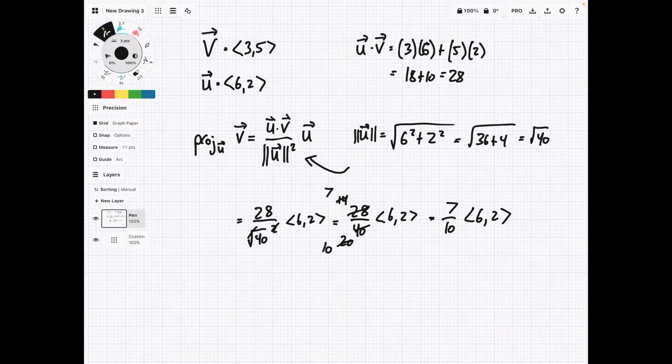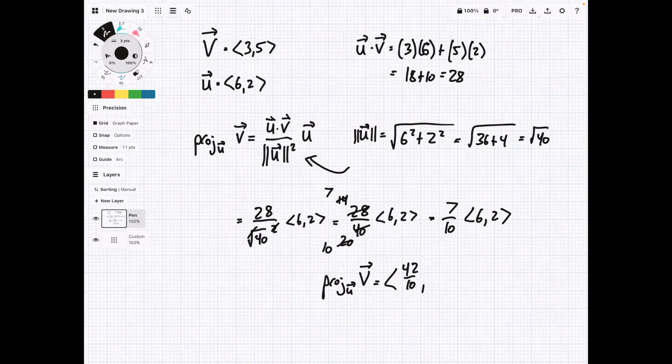So it's going to be 7 over 10 times the vector 6, 2. And so our final answer, the projection of v onto u, is equal to 42 over 10 and 14 over 10. So this can actually be simplified a little bit more. We can have 21 over 5, and then 7 over 5. And there is our projection.